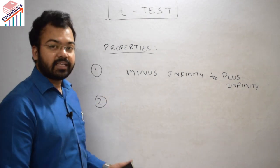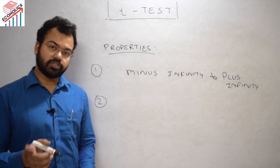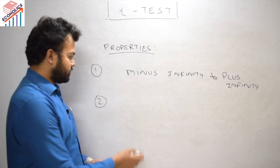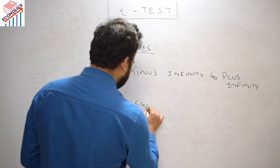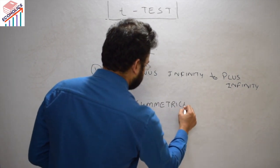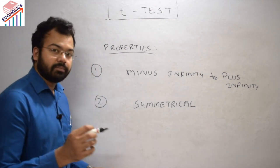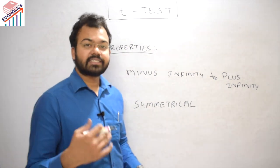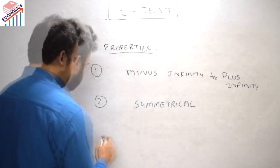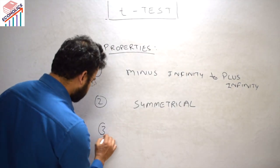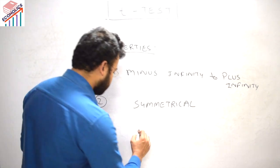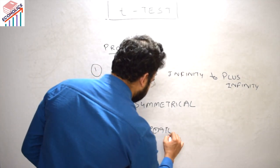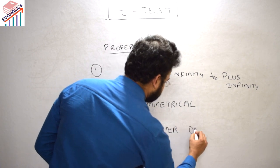The second property is that, like the standard normal distribution, the mean of the t-test is also 0, or symmetrical. The mean of the t-test is 0, on the same lines as the standard normal distribution. The third property is that the variance of the t-distribution is always greater than 1.